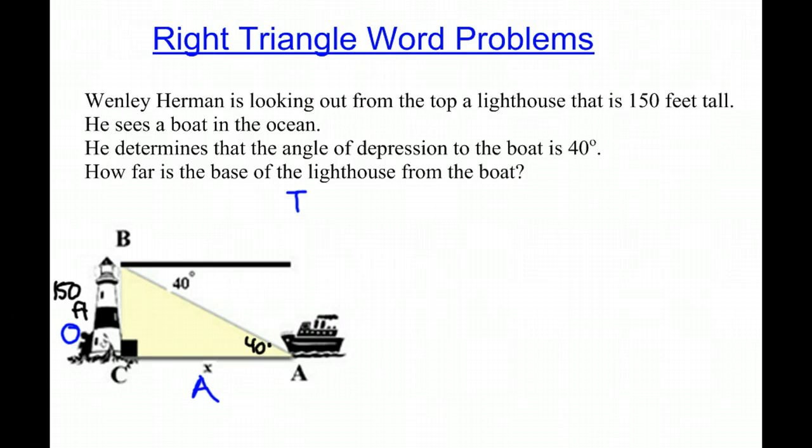Which means we're going to use tangent because tangent is opposite over adjacent. So let's write our equation. We say tangent of the degree, which is 40, will equal our opposite, 150, divided by our x, our unknown, which is our adjacent.